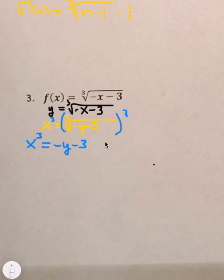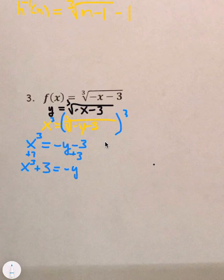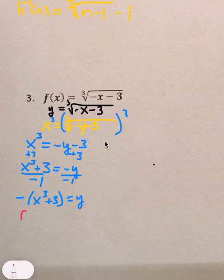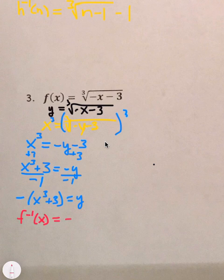And so, then, I'm going to add 3 to both sides. So, I have x cubed plus 3 equals negative y. Get rid of that negative. The negative divide everything by negative 1 and you get negative x cubed plus 3 equals y. And then, step 4, rewrite it as f inverse of x is equal to negative x cubed plus 3. OK. That's number 3.